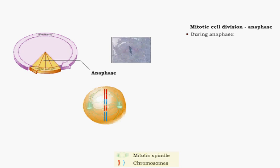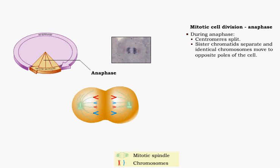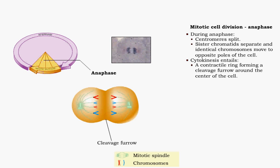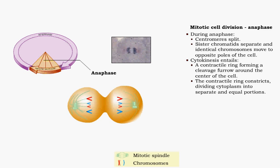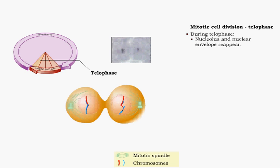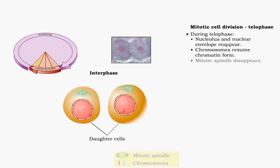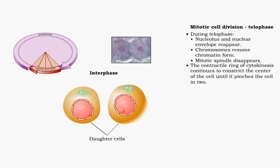During anaphase, centromeres split. Sister chromatids separate and identical chromosomes move to opposite poles of the cell. Cytokinesis, which begins toward the end of anaphase and the beginning of telophase, consists of a contractile ring forming a cleavage furrow around the center of the cell. This contractile ring constricts, dividing cytoplasm into separate and equal portions. The fourth and last stage is telophase. During telophase, the nucleolus and nuclear envelope reappear. Chromosomes resume chromatin form and the mitotic spindle disappears. The contractile ring of cytokinesis continues to constrict the center of the cell until it pinches the cell in two.